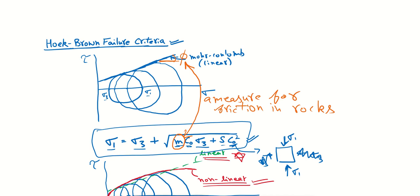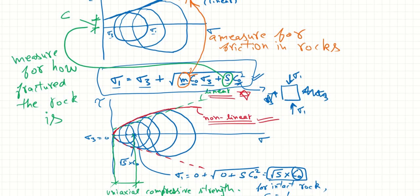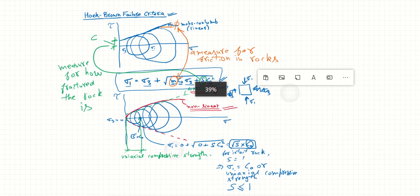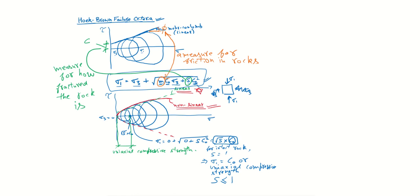And on the other hand, we also did not talk about S. S again is nothing but it is almost comparable to cohesion that we talked about in Mohr-Coulomb. It's a measure for how fractured the rock is, just how we just said like S would be one in a perfect world where you have completely intact, unfractured rock. And yeah, that's our Hoek-Brown failure criteria, and that's it for today. Thank you for watching, bye.